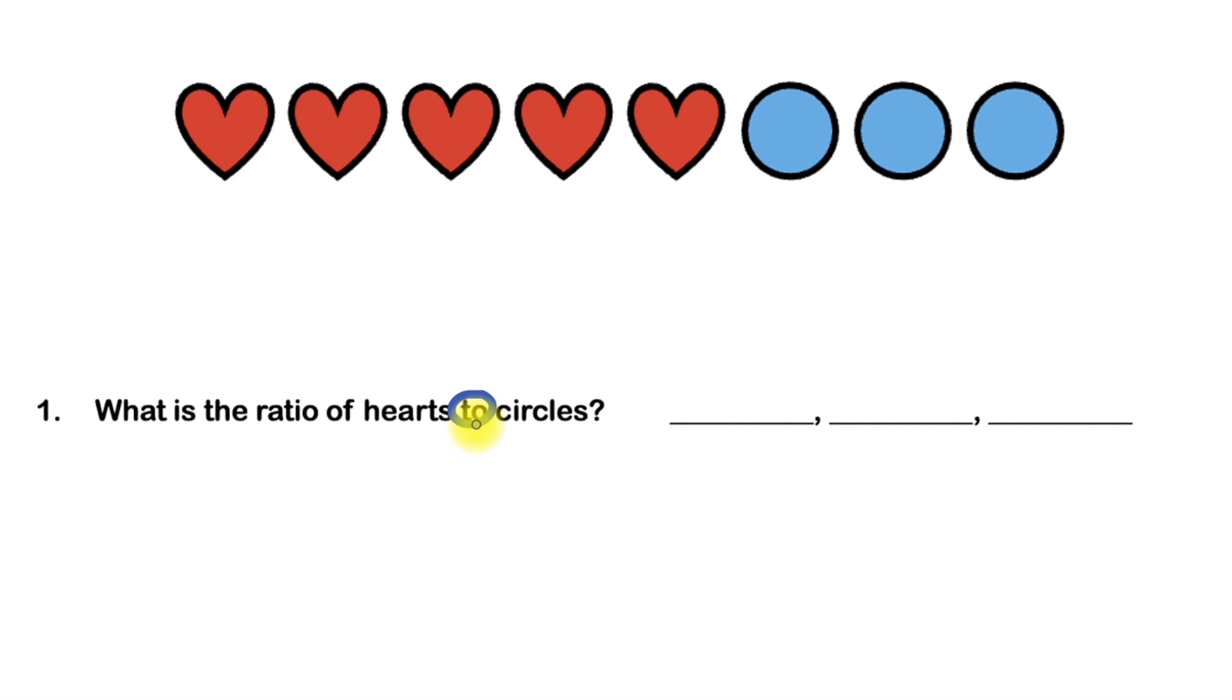In other words, what's the first thing we're talking about? Well, we're talking about the number of hearts. And the second thing we're talking about is the number of circles.